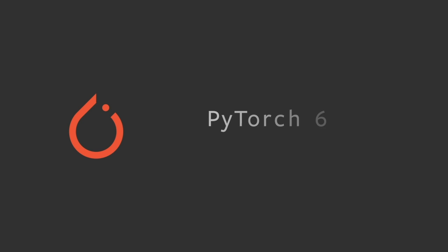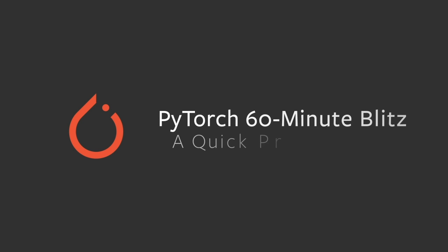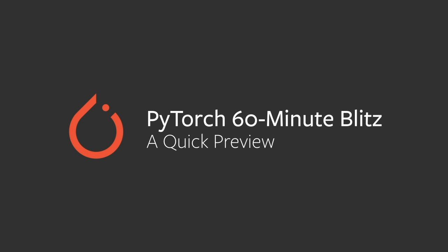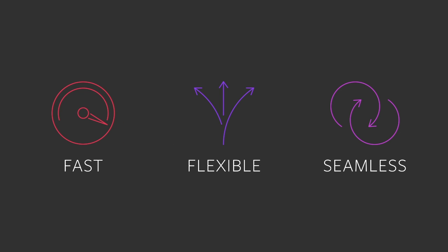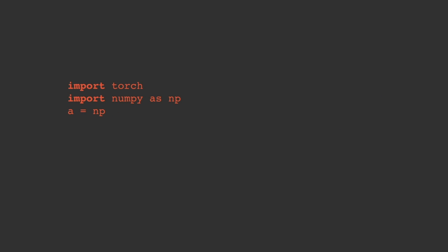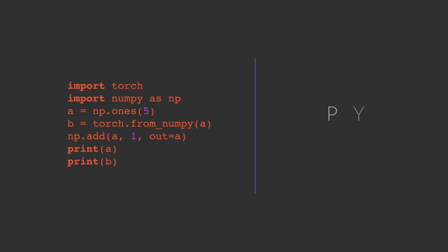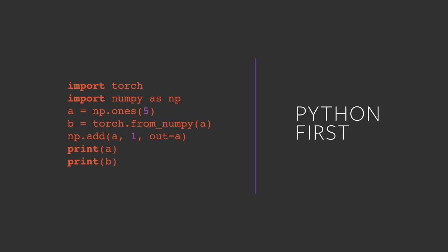PyTorch is one of the most popular open-source deep learning frameworks. Both researchers and developers use PyTorch because it provides fast, flexible experimentation and a seamless transition to production deployment. PyTorch is built to use the power of GPUs for faster training and is deeply integrated into Python, making it easy to get started.